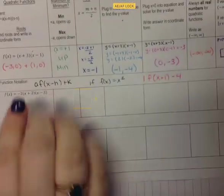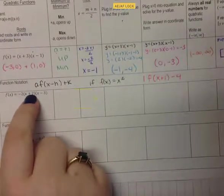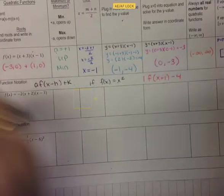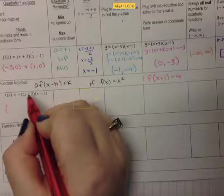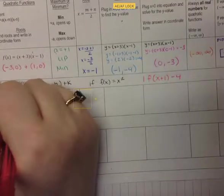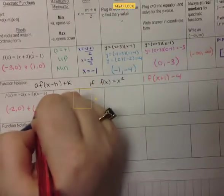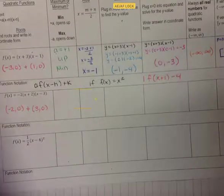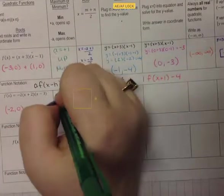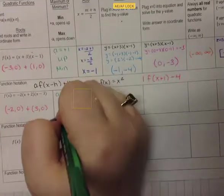On this next one, the roots come from the m and n values inside the parentheses. We change the signs: our roots are at (negative 2, 0) and (3, 0). The a-value is negative 2. Since a is negative, it opens down, which means it's a maximum.